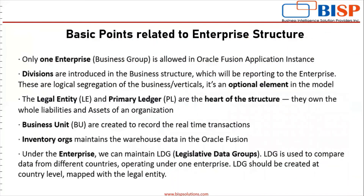Basic points related to enterprise structure: Only one enterprise, that is business group, is allowed in an Oracle Fusion application instance. Divisions are introduced in the business structure reporting to the enterprise; these are logical segregations of the business and are optional elements in the model. The legal entity and primary ledger are the heart of the structure — they own the whole liabilities and assets of an organization. Business units are created to record real-time transactions. Inventory organization maintains the warehouse data in Oracle Fusion.